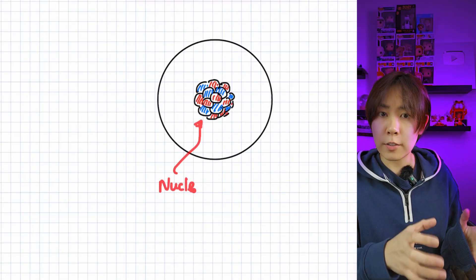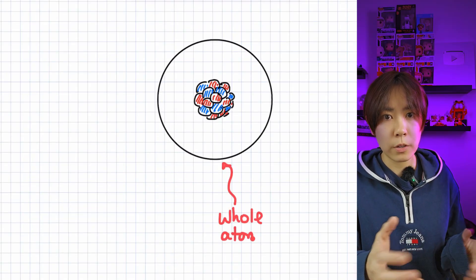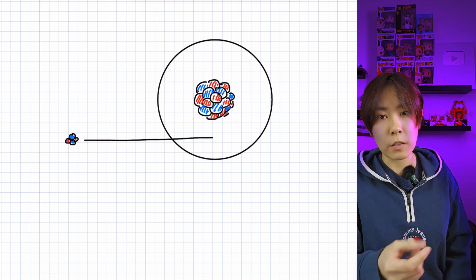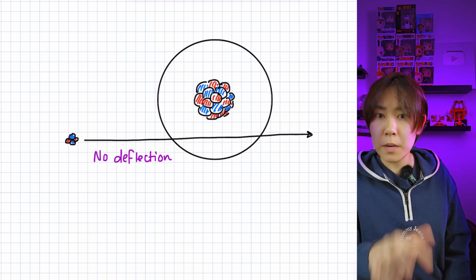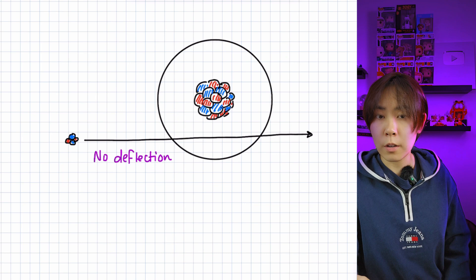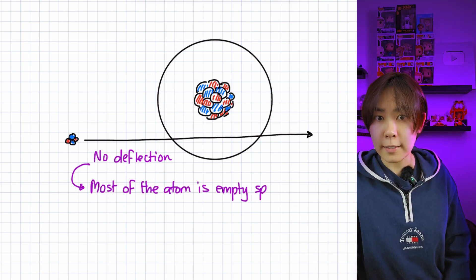Let's zoom in to look at just a single gold atom in the foil. Most of the alpha particles pass straight through the foil with minimal or no deflection. That tells us that the atom is mostly empty space.